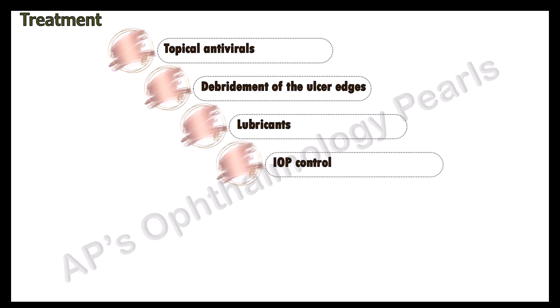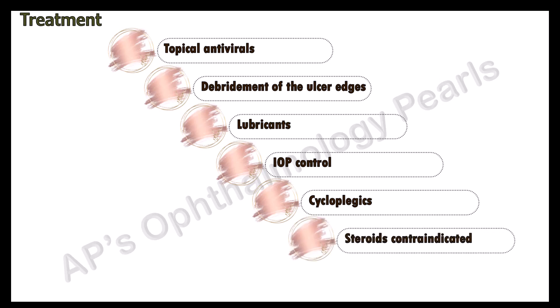If intraocular pressure is high, anti-glaucoma drugs may be given, and cycloplegics may be given if there is pain to relieve ciliary spasm. In pure epithelial lesions, topical steroids are contraindicated. Oral acyclovir is also effective and may be given in a dose of 400 milligrams 5 times per day. The more common indication for oral acyclovir is to reduce the rate of recurrence of epithelial and stromal keratitis in patients with frequent debilitating recurrences, at a dose of 400 milligrams twice a day.